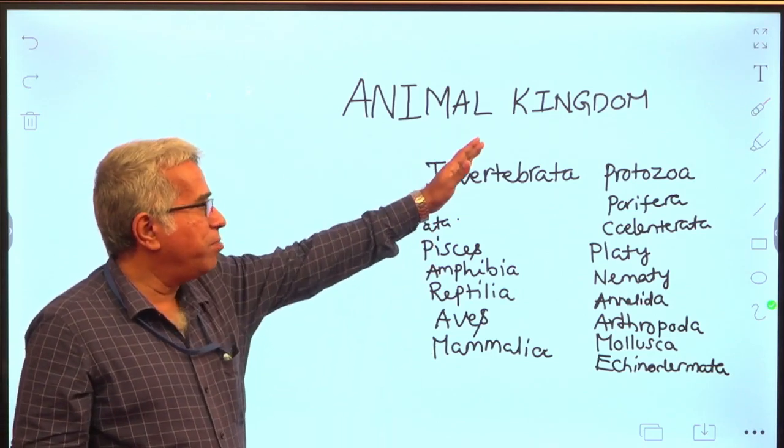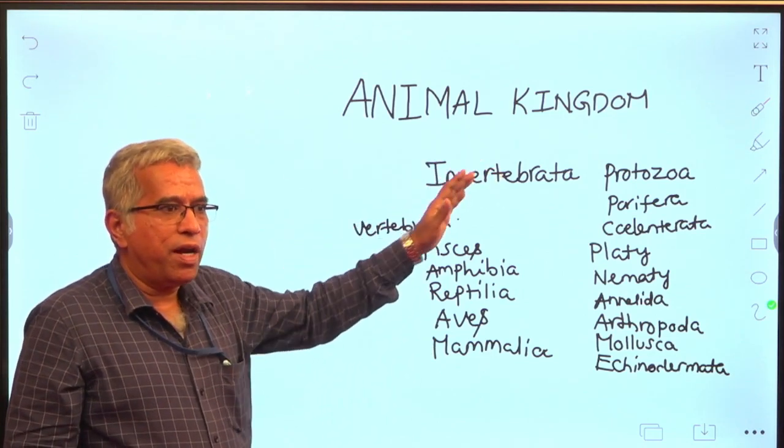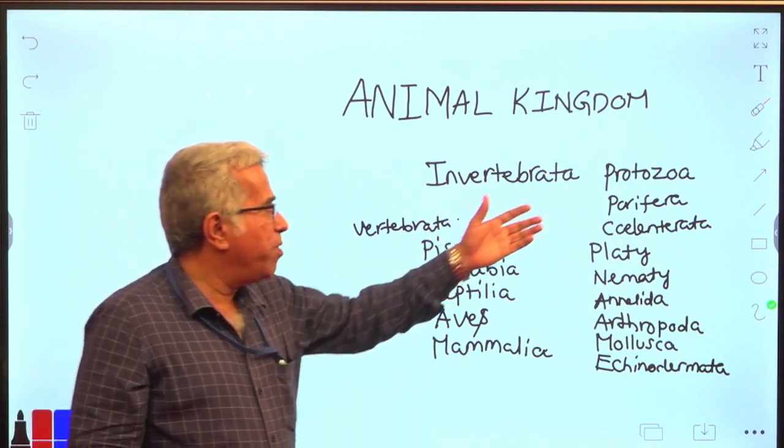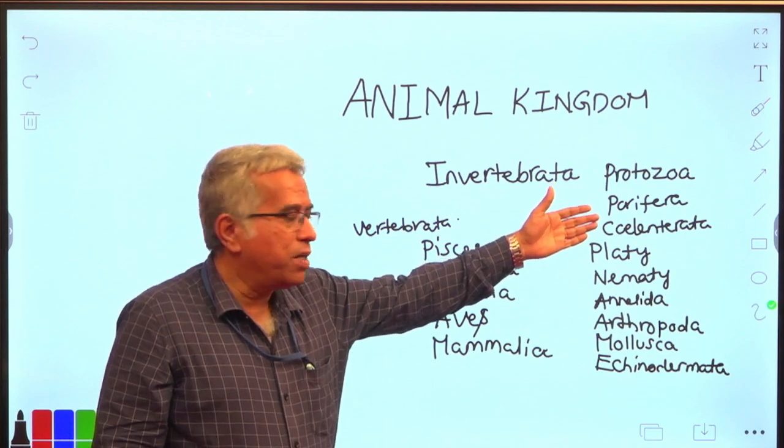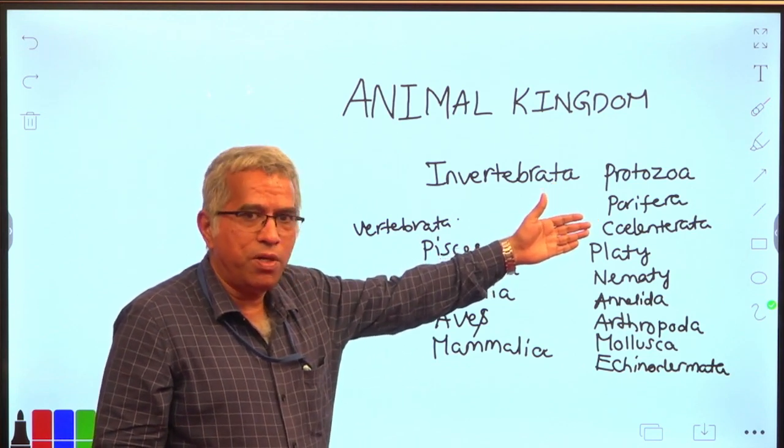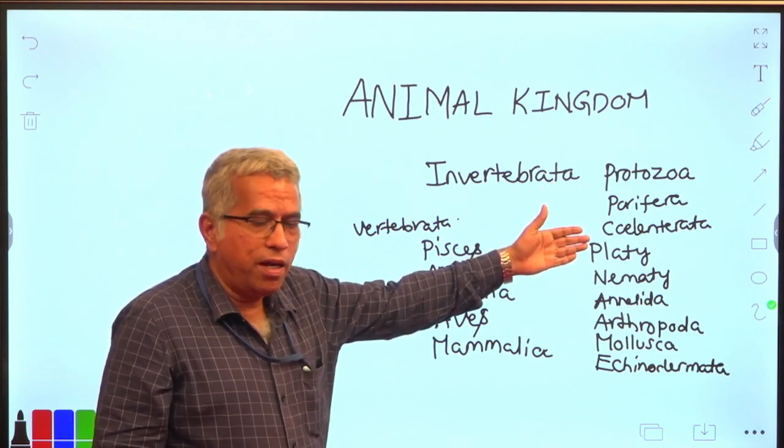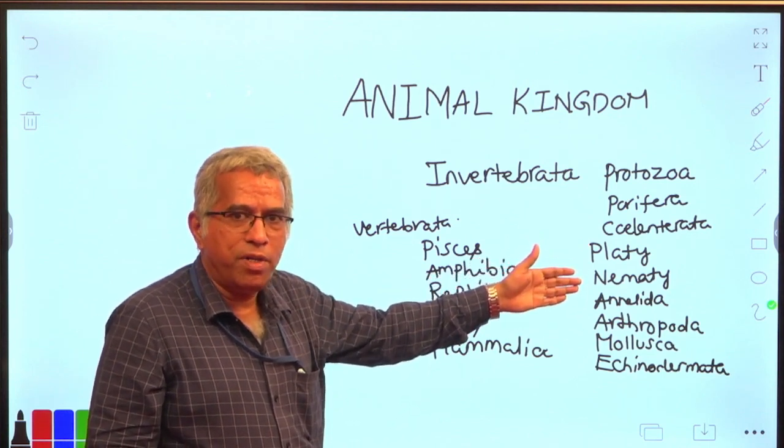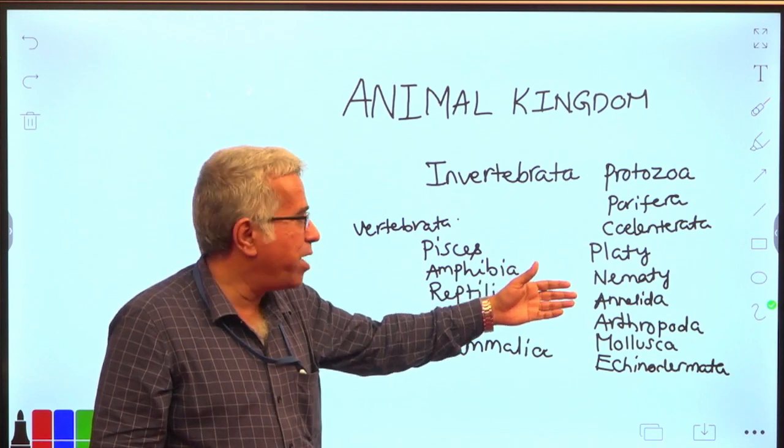Let me sum up. The animal kingdom contains animals which are categorized into invertebrata and vertebrata. Invertebrata includes protozoa which are unicellular, porifera which exhibits cellular grade of organization, coelenterata which includes hydra and jellyfishes, platy and nematihelminthes which are majorly parasites.